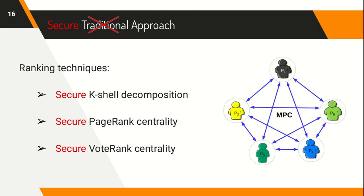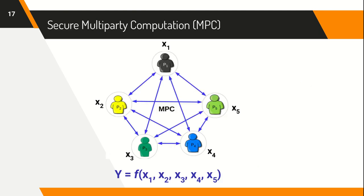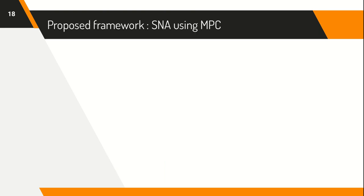Thus, we propose the use of Secure Multiparty Computation, or MPC, to design secure variants of these standard techniques. MPC is a branch of cryptography that allows parties to communicate among themselves to securely compute the output of a predetermined function f, which takes as input the private data of each of them. The computation ensures that the parties learn no additional information apart from the desired output. The current problem can be modeled as an instance of MPC as follows.